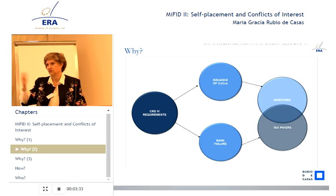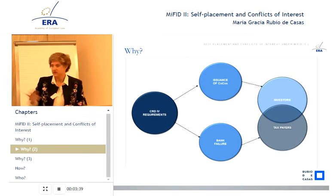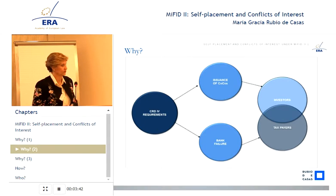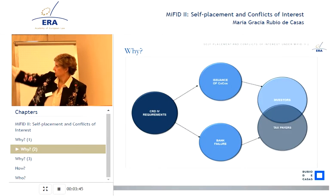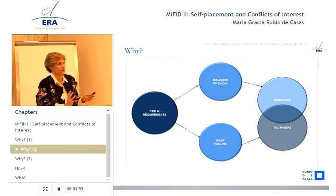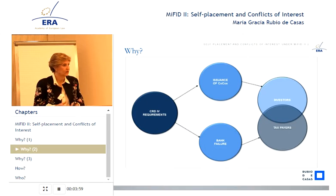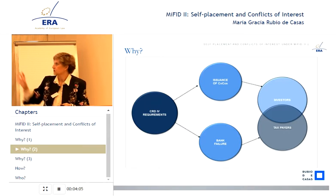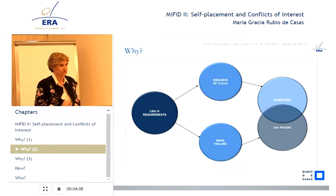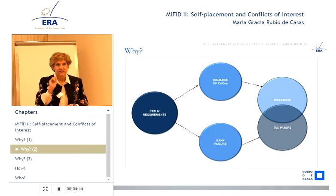Let the banks fail — Northern Rock — taxpayers will rescue them. The other alternative was to let the banks issue contingent convertible bonds. Investors will be footing the bill. So in several cases, Spain being probably the most spectacular one, regulators who were placed in a very difficult position chose to let the banks issue COCOs and let investors buy the COCOs.